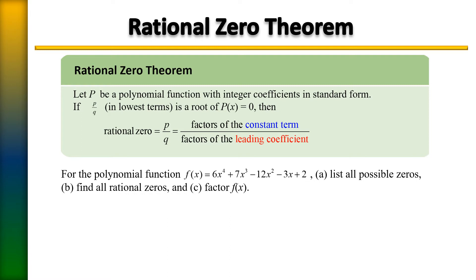Next, identify the leading coefficient. First identify the leading term. The leading term of a polynomial in standard form — highest degree down to lowest degree — is the term with the highest degree. In this case, 6x to the 4th has the highest degree, so that is the leading term. The leading coefficient is simply the number in front, which is 6. So our constant is 2 and the leading coefficient is 6.